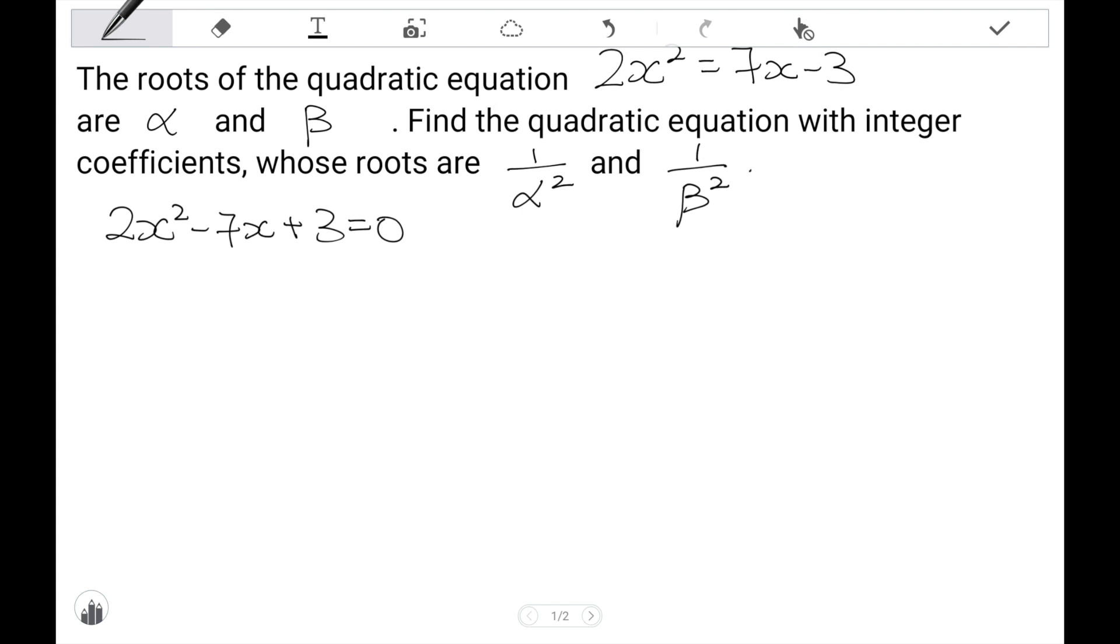We know that the sum of roots, or in this case, the sum of alpha and beta, is negative b over a, or 7 over 2. Next, we know that the product of roots, or alpha times beta in this case, is c over a.